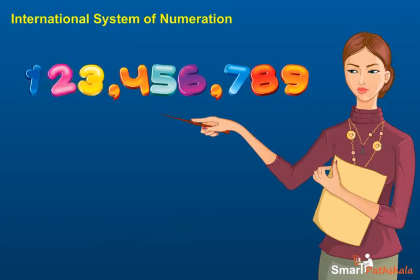The number 123,456,789 is read as: one hundred twenty-three million, four hundred fifty-six thousand, seven hundred and eighty-nine.